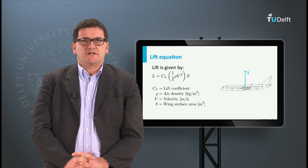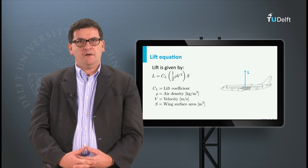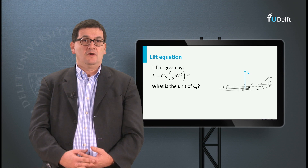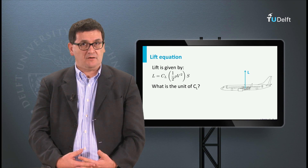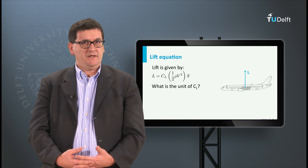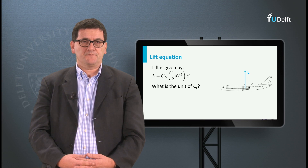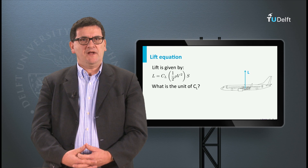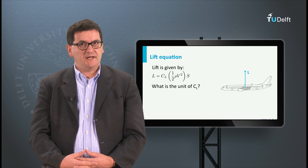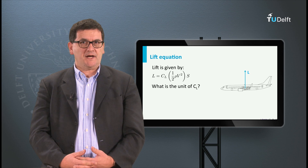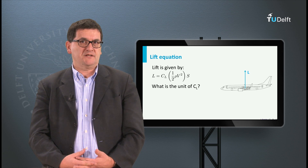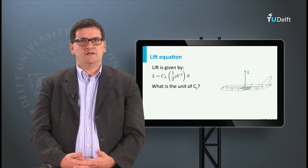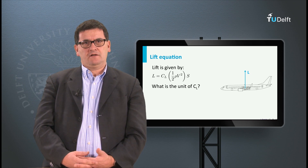For all parameters except for the coefficients, the dimensions of the parameters are given. The question is therefore: what is the dimension of Cl? How do we determine its dimension? In this case we use a dimensional analysis. Such analysis can also be used to check whether a formula or equation is correct — if not, the dimensions on both sides of the equal sign are different.